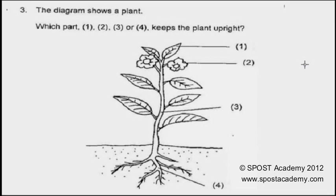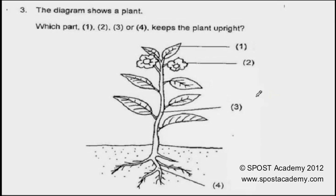Number 3 is the stem, and the stem is the one that keeps the plant upright, so the answer is number 3. Number 4 is the root, and the root functions to absorb water and transport it to the rest of the plant through the water-carrying tube.